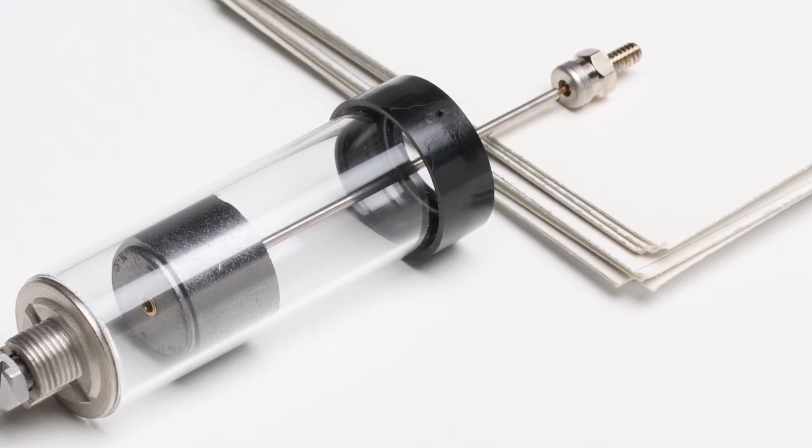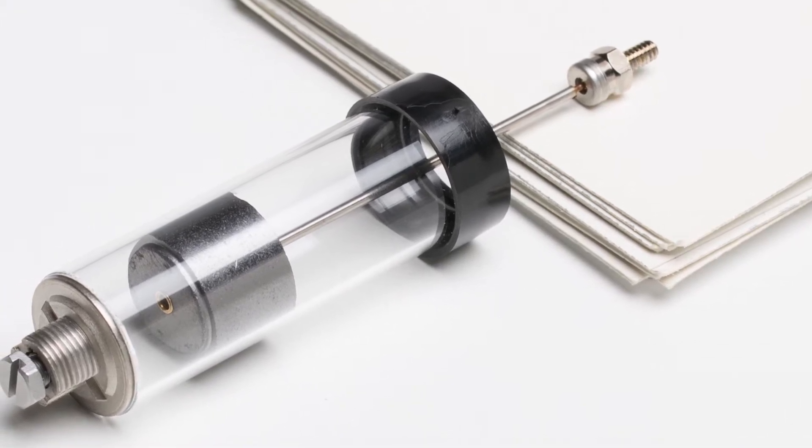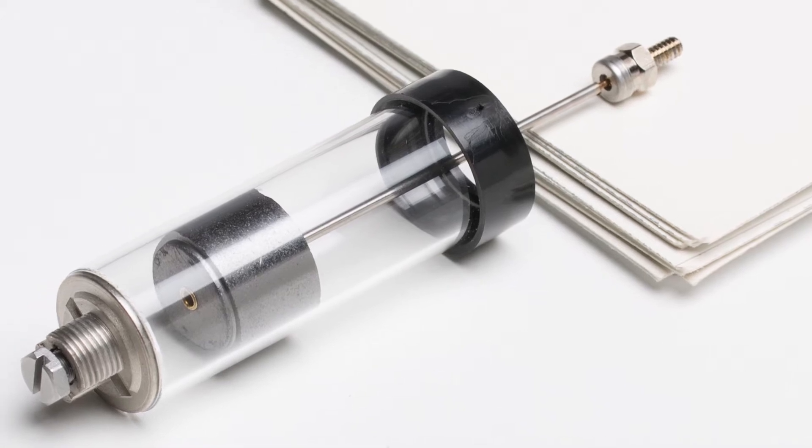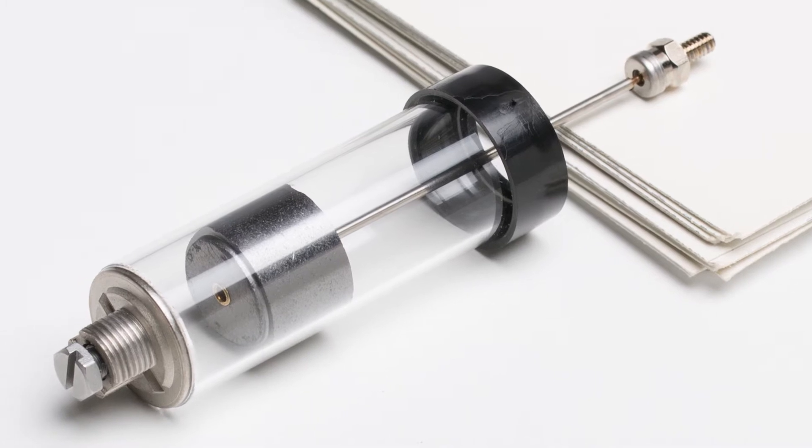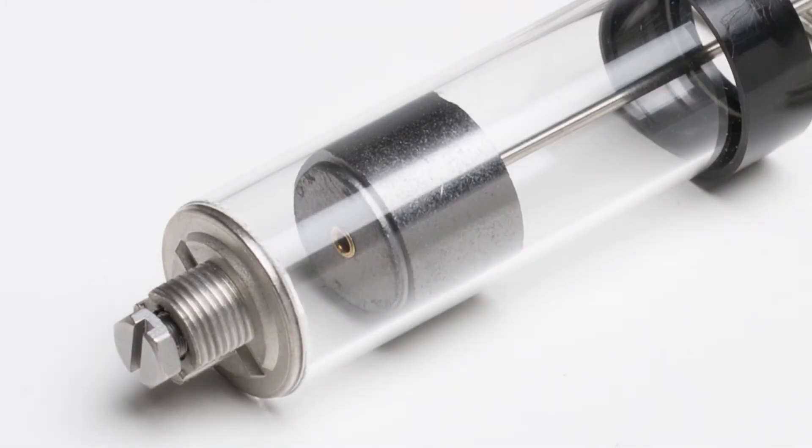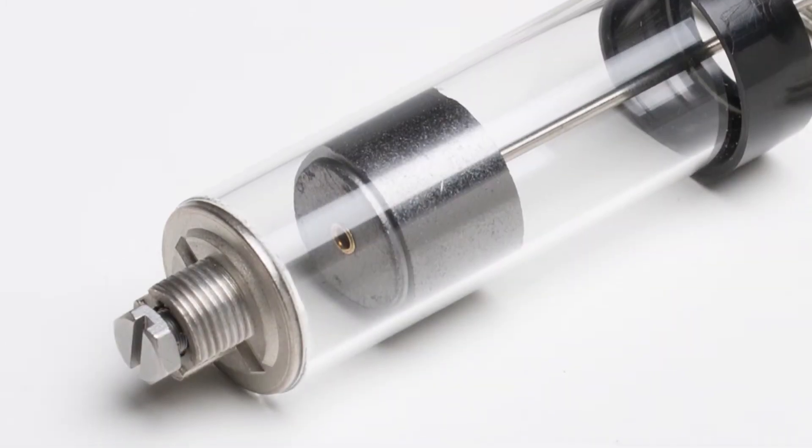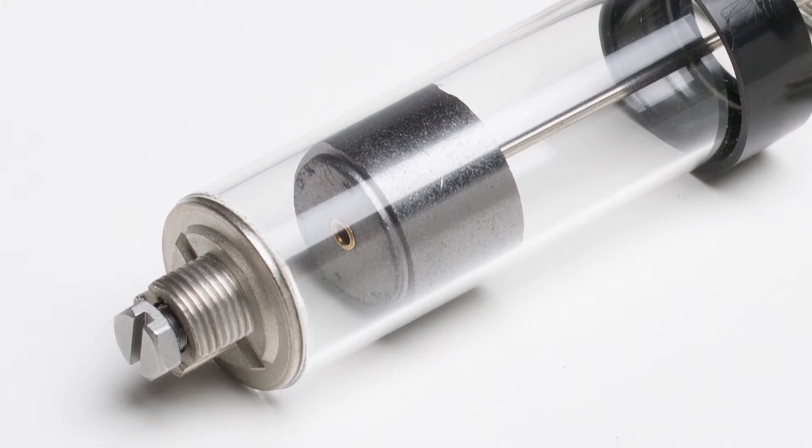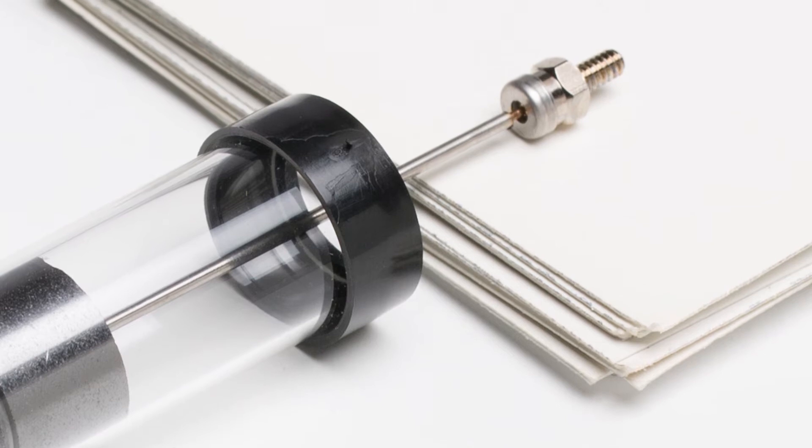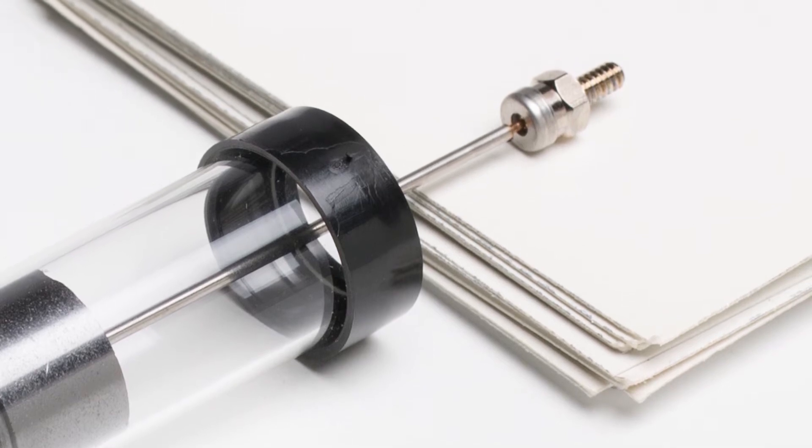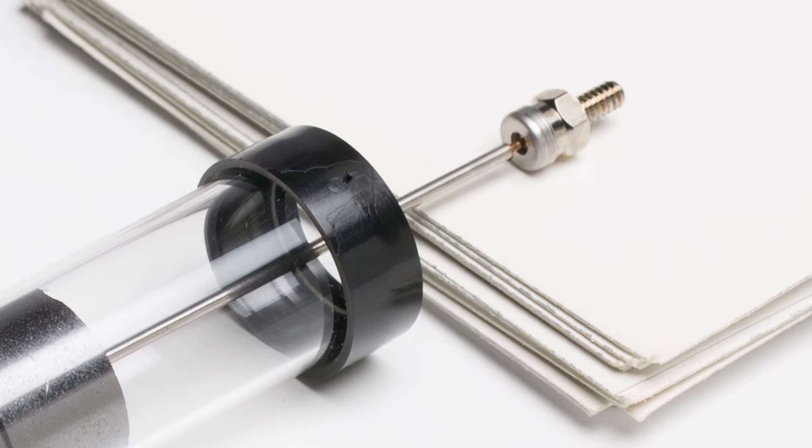We start with a precision bore cylinder made of borosilicate glass, then an ultra-low friction graphite piston is closely fit to the cylinder to minimize leak without using seals. An adjustable restriction tunes the damping by precisely controlling the rate at which air flows in or out of the cylinder.